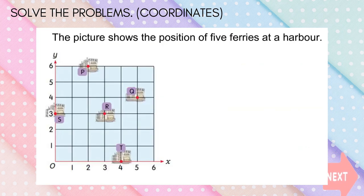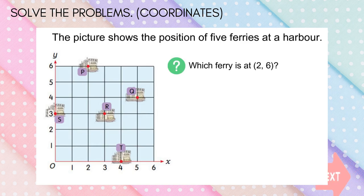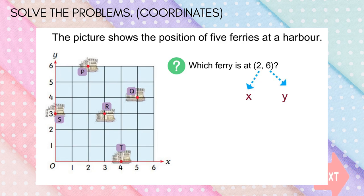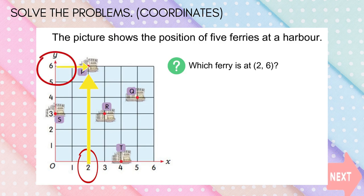Now look at this example. The picture shows the position of 5 ferries at a harbour. Which ferry is at the coordinate (2, 6)? The coordinate given is (2, 6), meaning X is 2 and Y is 6. Look at the X axis and find 2. From 2, move up until Y is 6. So ferry B is at (2, 6).